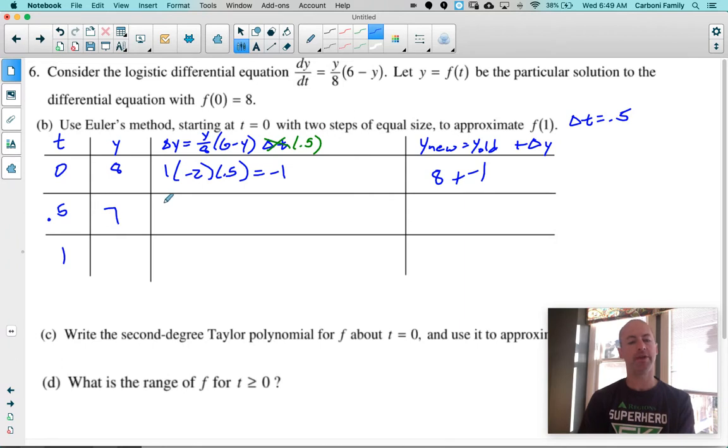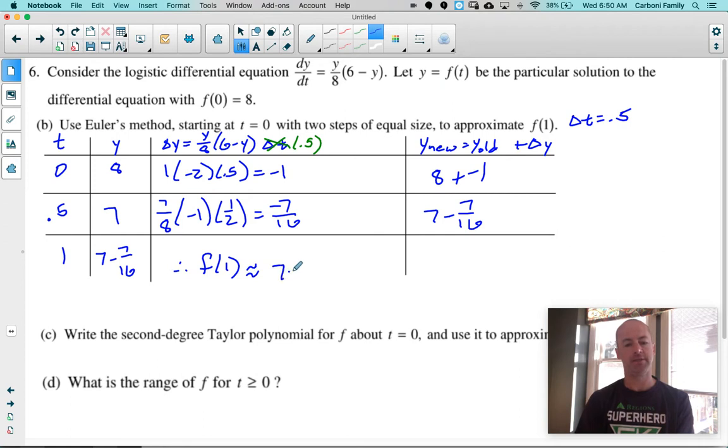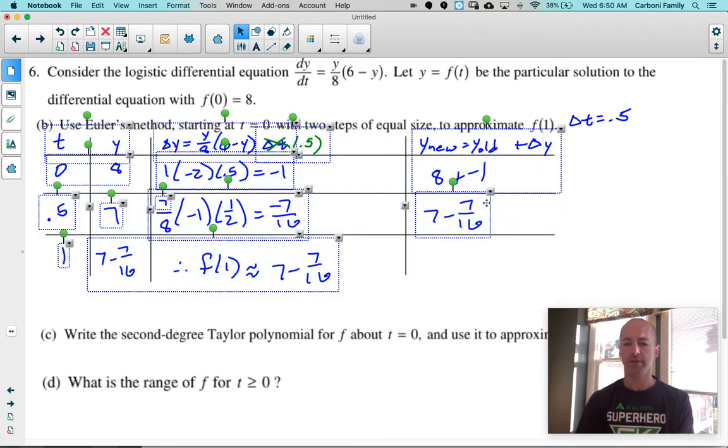And then I'm going to plug that Y in here. So we have seven eighths. I need to get my Delta Y for Y being seven times six minus seven is going to be negative. Whoops! I forgot my Delta T. Oh, why did I undo all that? Seven eighths times six minus seven, which is negative one times my Delta T, which is 0.5. I'm going to change that to one half because now I can get that as negative seven over 16. And so my new Y is seven minus seven over 16. And because I don't want to hurt myself getting a common denominator, this is a non-calculator question. That is my approximate value of Y when T is one. So now I can say that by Euler's method, F of one is going to be approximately seven minus seven sixteenths. And there is all of your work for the Euler's method problem.